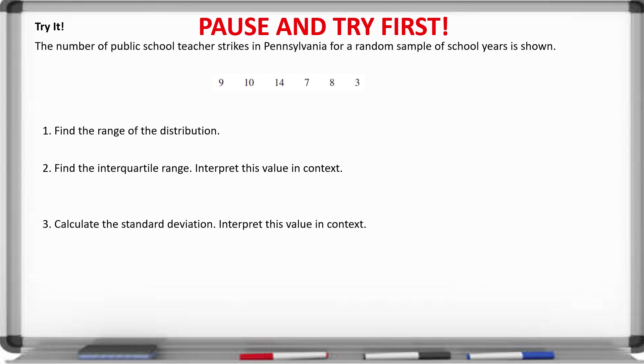The number of public school teacher strikes in Pennsylvania for a random sample of school years is shown below. Find the range of the distribution. The range is maximum minus minimum — in this case the maximum is 14 and the minimum is 3, so we take the difference and get 11.